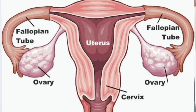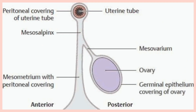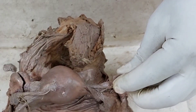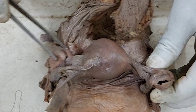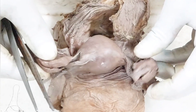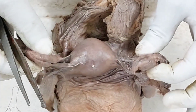The ovary is present behind the mesometrium and is connected to the posterior layer of the broad ligament by the mesovarium, also called the mesentery of the ovary. Looking at the specimen, this is the ovary on one side and this is the ovary on the other side — it is cut open, so we can see the ovary of both sides.